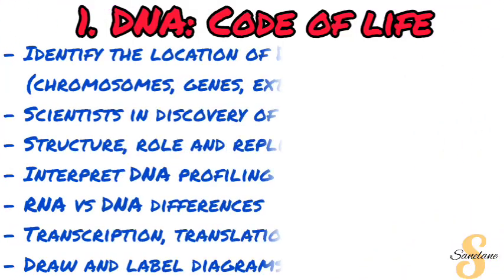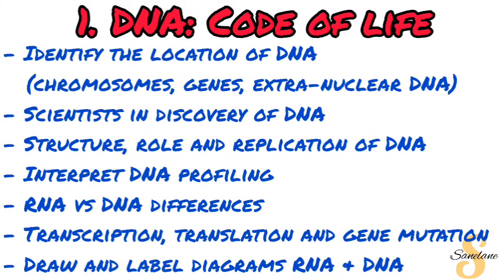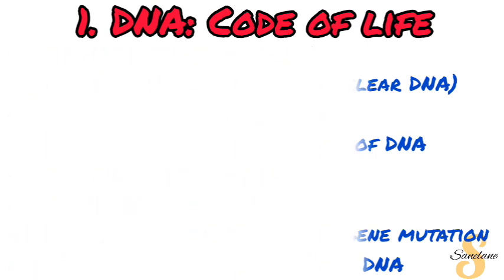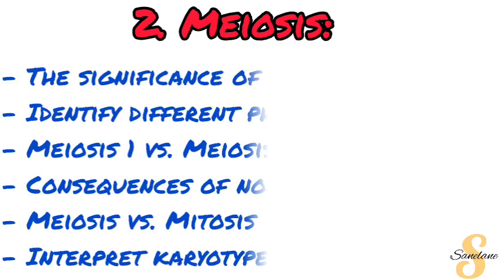In our first topic, DNA: The Code of Life, you need to be able to identify the location of the DNA — that is the chromosomes, the genes, and the extra-nuclear DNA. You need to be able to name and give the roles of the scientists in the discovery of DNA, do the structure, role, and replication of DNA, interpret DNA profiling, do RNA and DNA differences, then get to transcription, translation, gene mutation, and be able to draw and label diagrams of DNA and RNA.